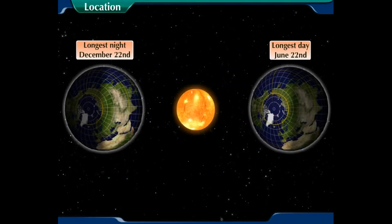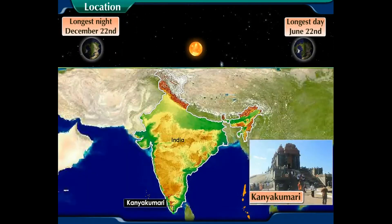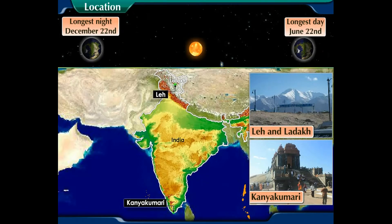For example, the difference between the longest and the shortest day near Kanyakumari is about 15 minutes, whereas this difference is nearly 4 hours in Leh and Ladakh.